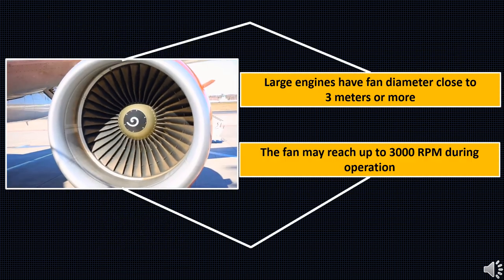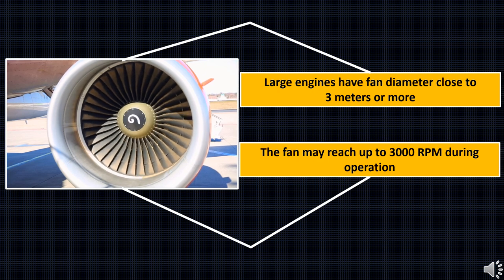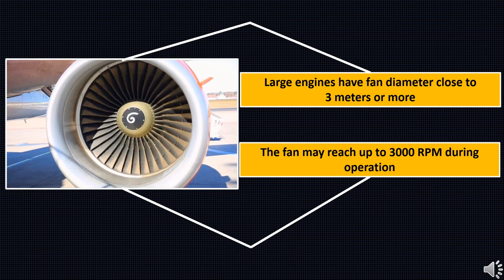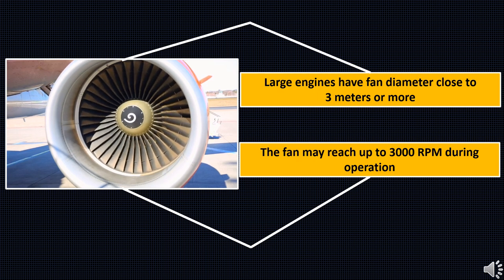The most critical component in turbofan engines are the fan blades. The fans used are so large and have a diameter close to three meters. Due to the higher RPMs with which the fan rotates and the large radial lengths of the blade, the centrifugal stresses produced in the blades are enormous during operation.